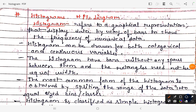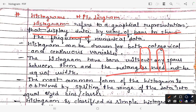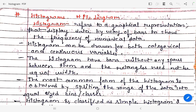A histogram is basically a graphical representation of the data. It refers to a graphical representation that displays data by way of bars to show the frequency of numerical data. Basically, bars are used to represent the data — these are rectangular bars. If rectangular bars are used, it is called a histogram.